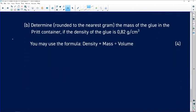Determine rounded to the nearest gram the mass of the glue in the Prit container if the density of the glue. So we've been given that. We've been given the density of it. We've got the volume of it. Now we are looking for the mass. So we've got that. Let's see how we are going to do this particular one in terms of what we are given. So this is density. So I'm going to put density under density.